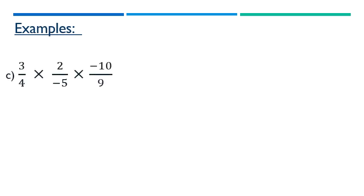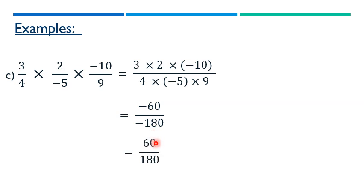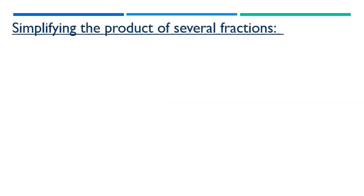Now suppose we have three fractions: 3 over 4 times 2 over minus 5 times minus 10 over 9. We multiply numerators: 3 times 2 times minus 10 equals minus 60. Denominators: 4 times minus 5 times 9 equals minus 180. Since negative divided by negative is positive, the result simplifies to 60 over 180.